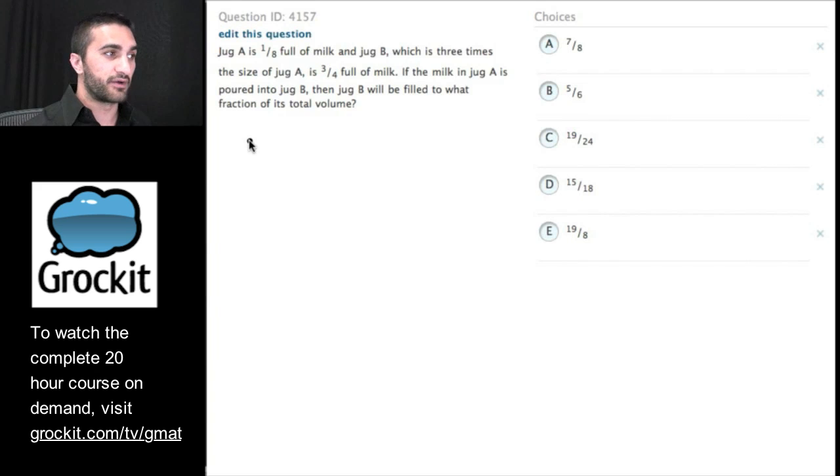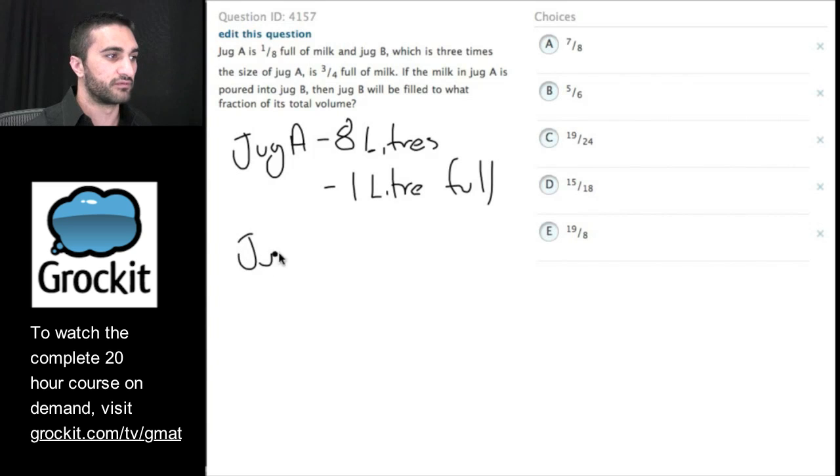So let's take a look at another question here. We have plenty more to look at today. Go ahead and read it real quickly and we'll work on this one together. Great. Let's just break it down into pieces. We see some fractions here, 8 and 4. Let's work with some numbers that work well with these fractions. Jug A is 1/8 full of milk. So let's say jug A has 8 liters of milk. 8 liters, sorry, is how big it is. 8 liters. And this has 1/8 full, so it's 1 liter full.